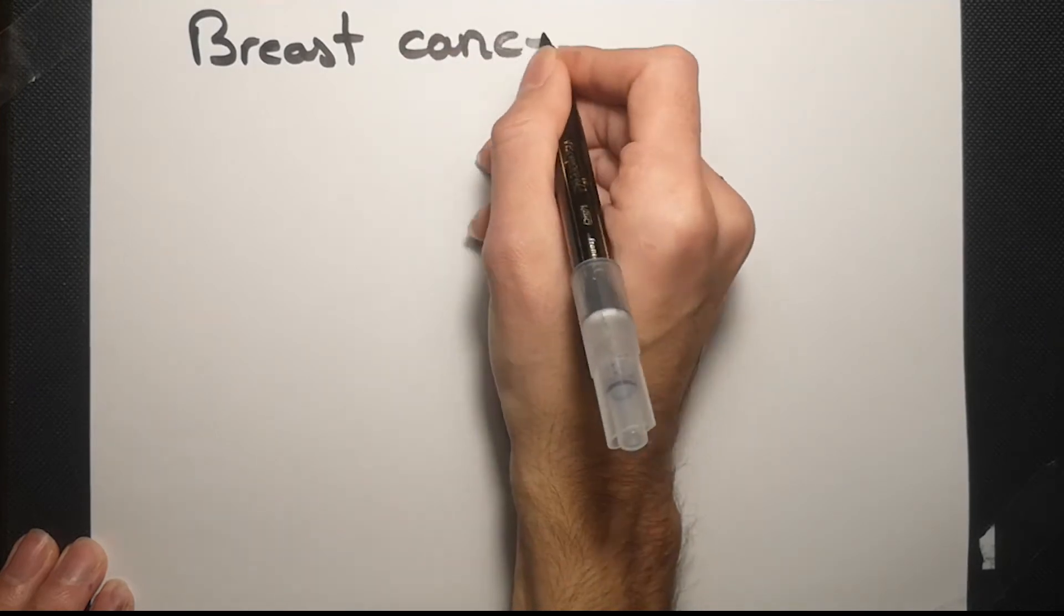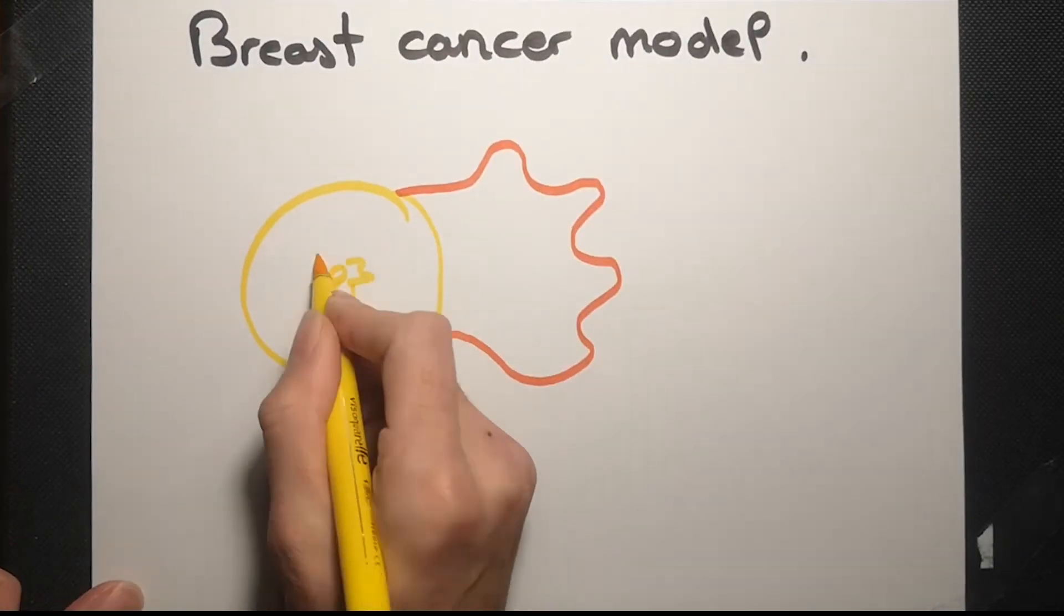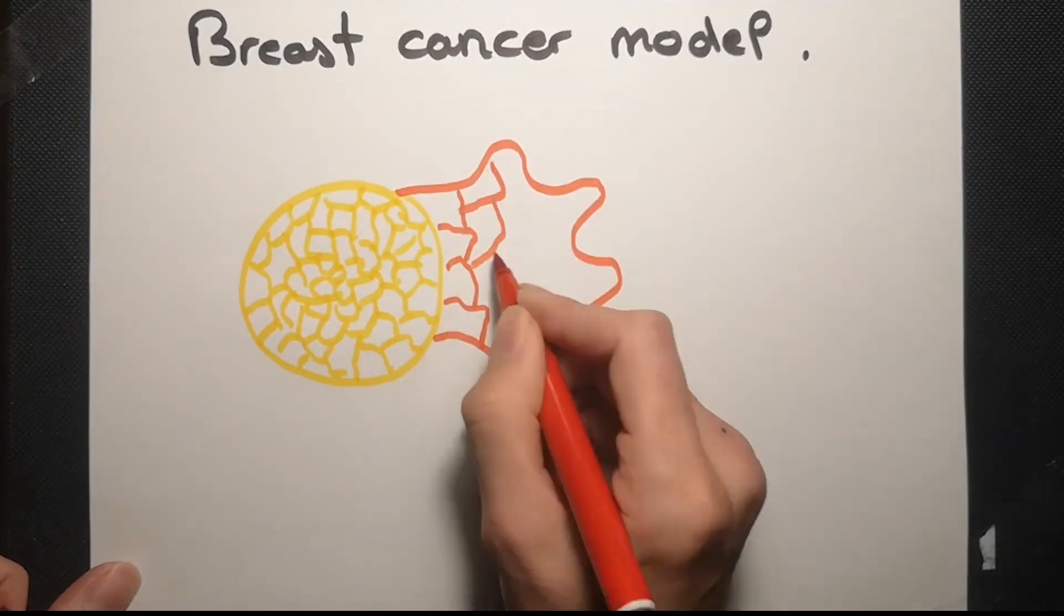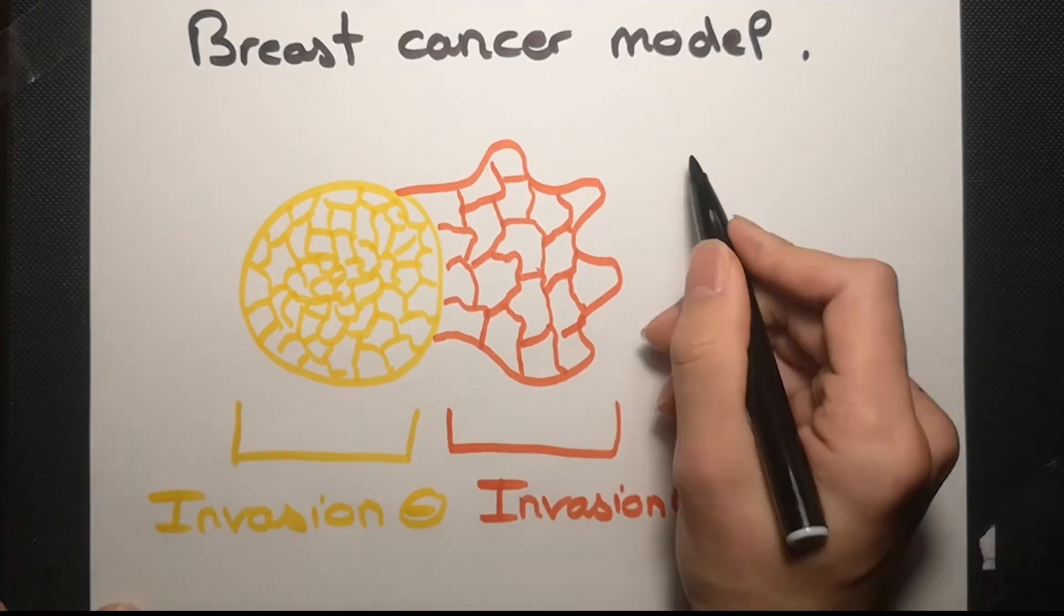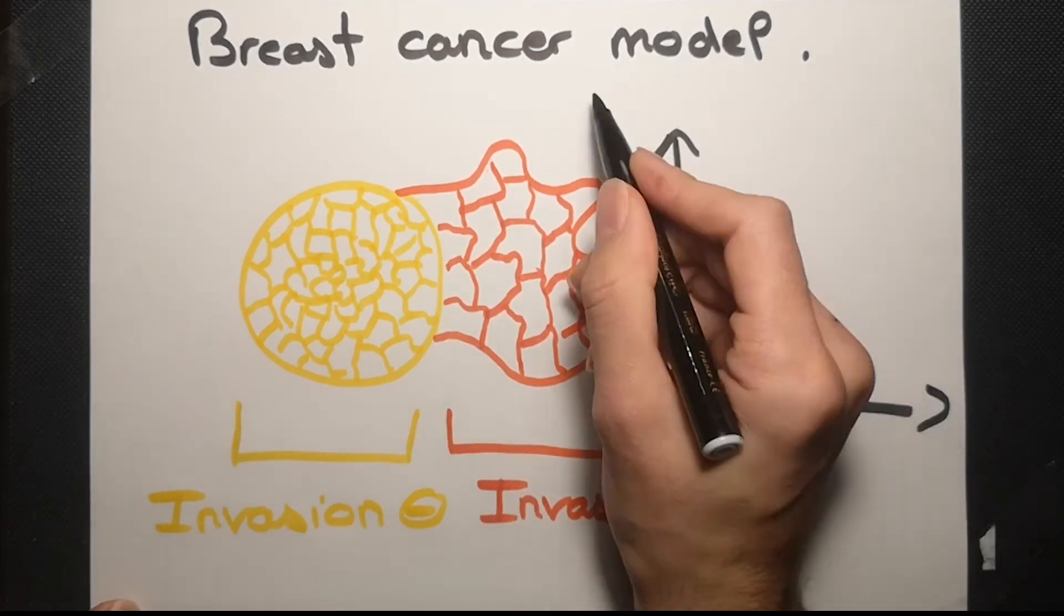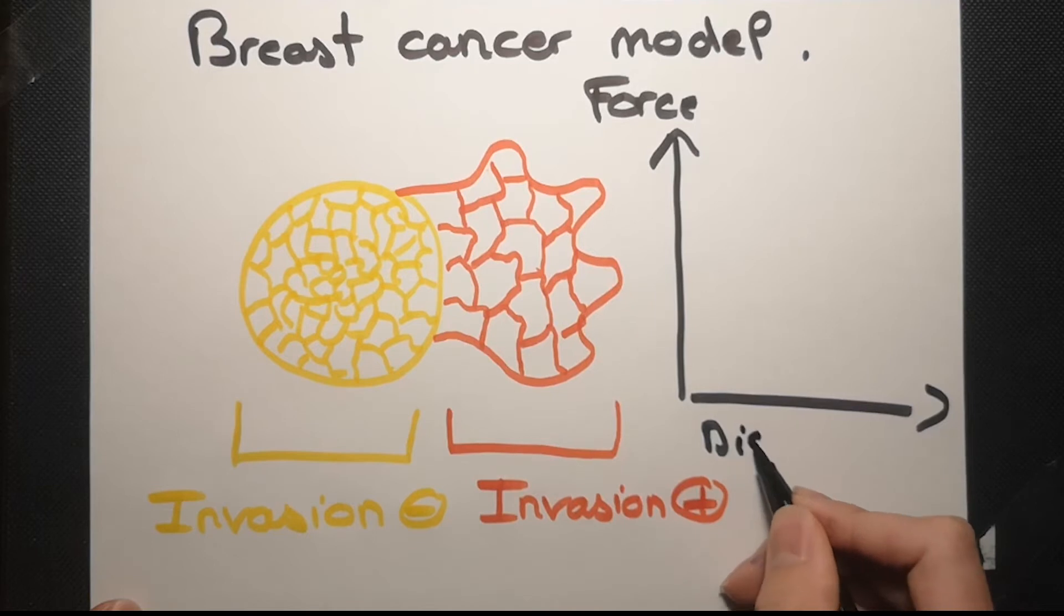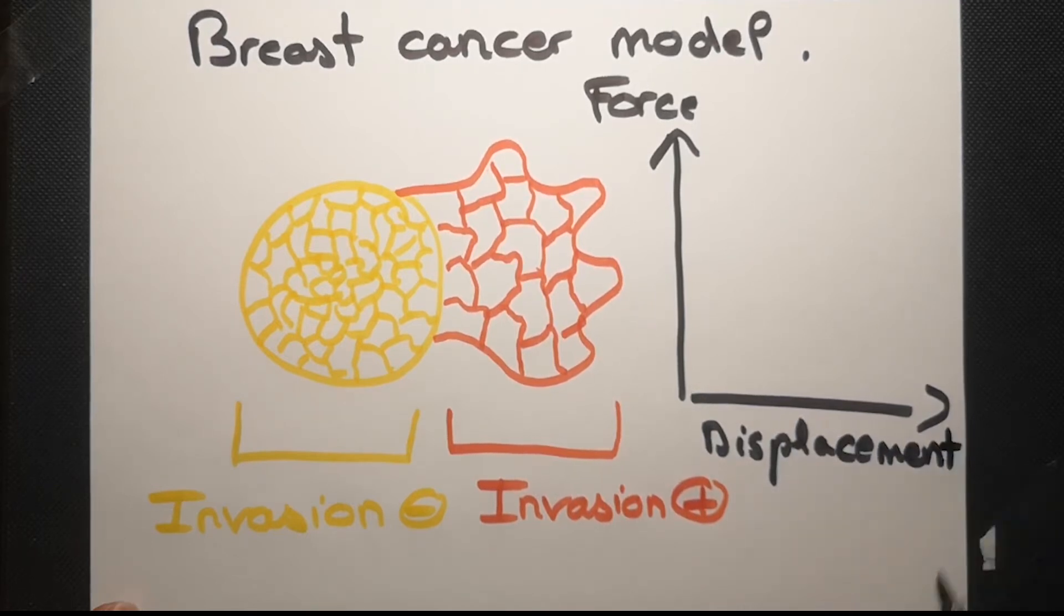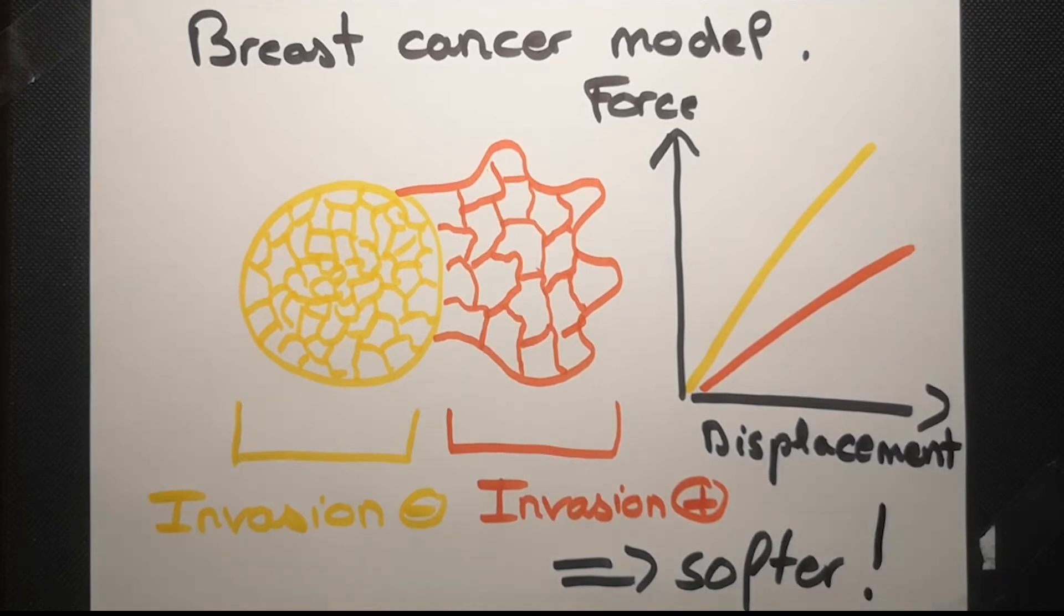For example, in a breast cancer model, we compare two populations, one more invasive than the other. With the optical tweezers, we can plot the force as a function of displacement of the beads, and we notice that the more invasive cells are the softer.